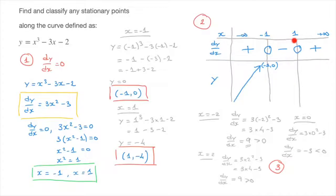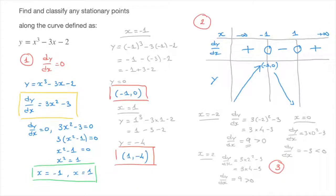From negative 1 to 1, dy/dx is negative, meaning the curve is going downwards — I show a downward arrow. At x equals 1, the curve reaches its second stationary point with coordinates 1, negative 4. For x values greater than 1, dy/dx is positive, so the curve is increasing again, shown with an upward arrow.